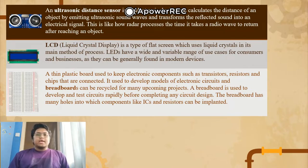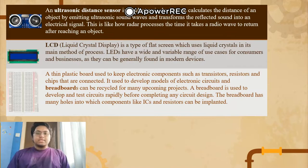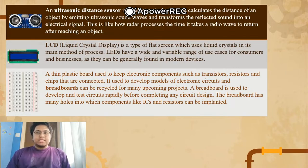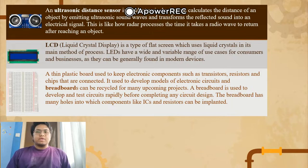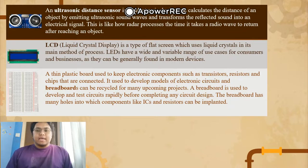Next is the LCD (liquid crystal display) — a type of flat screen that uses liquid crystals in its main method of operation. LCDs have a wide range of use cases for both consumer and business devices. Last but not least is the breadboard — a thin plastic board used to hold electronic components such as transistors, resistors, and other components for developing models of electronic circuits. Breadboards can be recycled for many upcoming projects and are used to develop and test circuits rapidly before finalizing any circuit design.